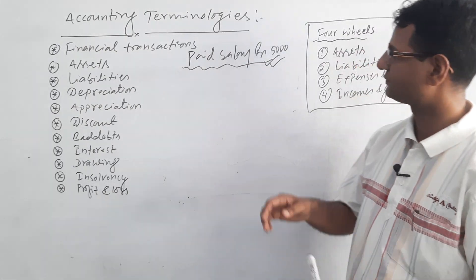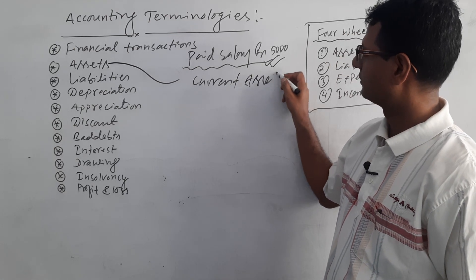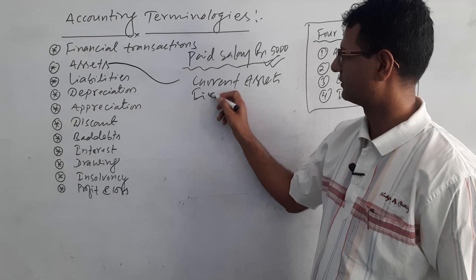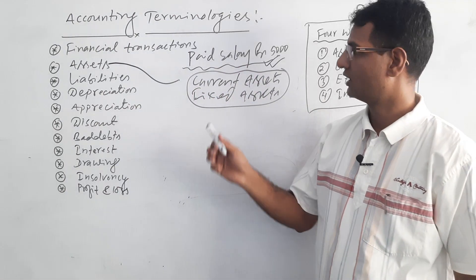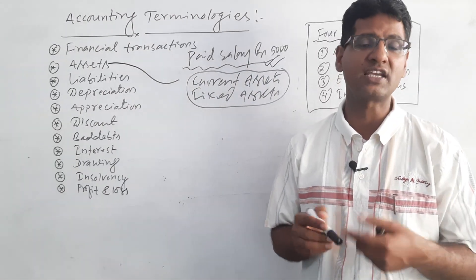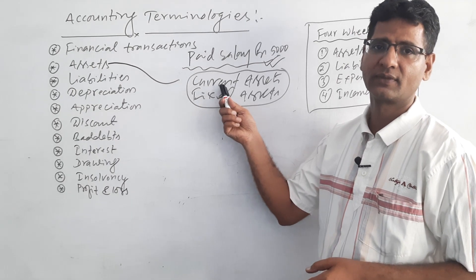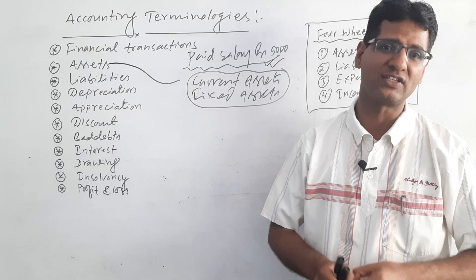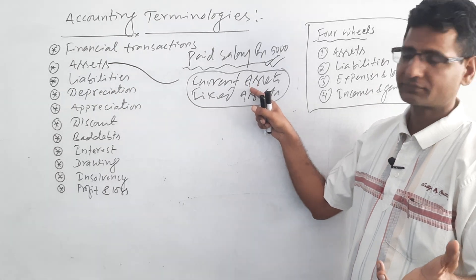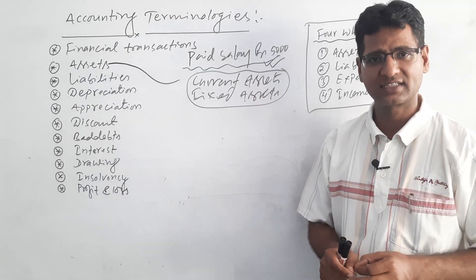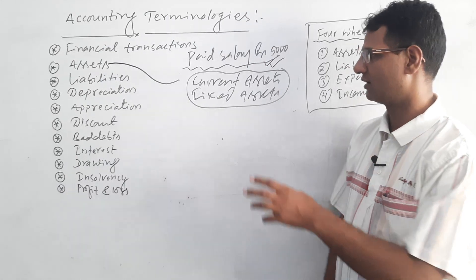There are two types of assets: current assets and fixed assets. Those assets which we can change into cash or cash equivalent within one accounting year are known as current assets. Those assets or properties which a business can use continuously for a long period of time are called fixed assets.